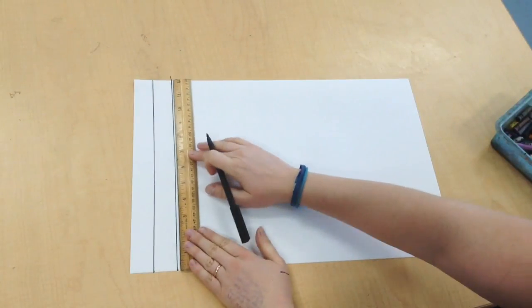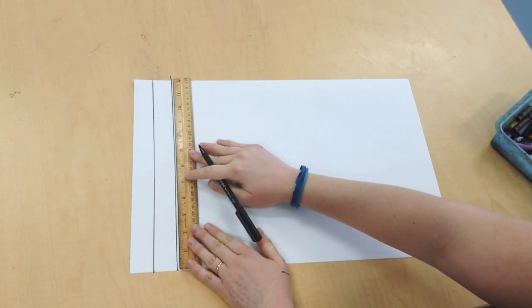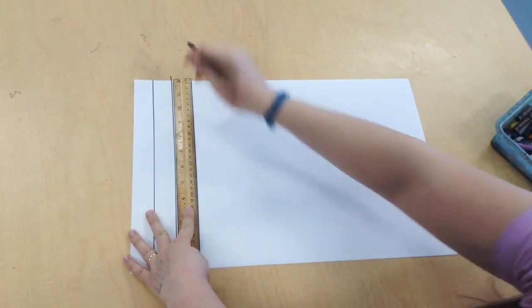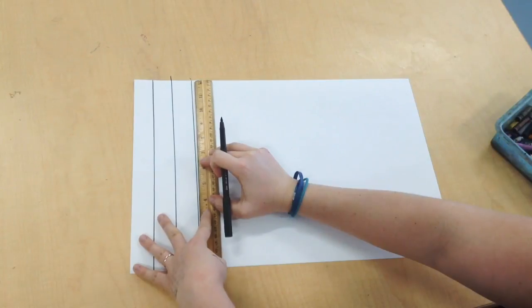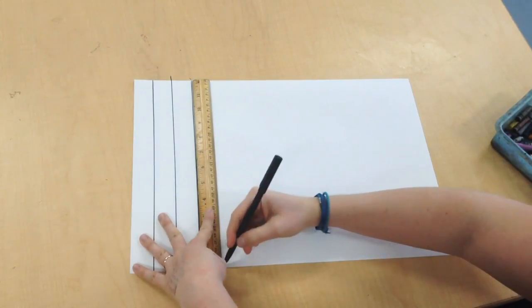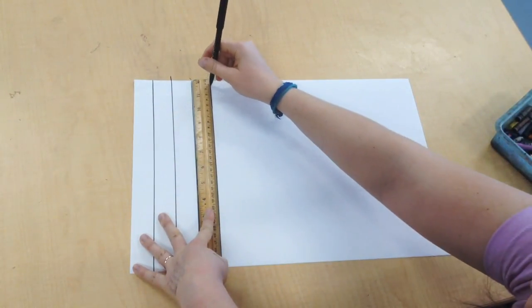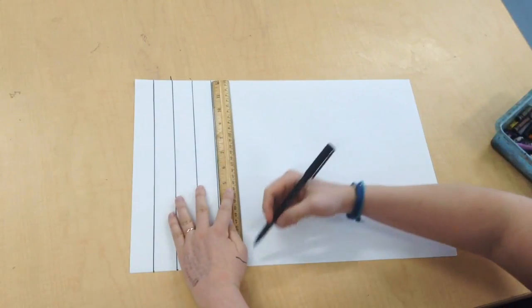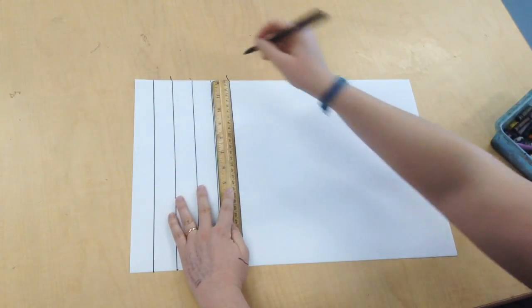Then I'm going to move my ruler over, line it up, draw another line. I'm going to do this all the way down my page. That's going to give me some nice evenly spaced stripes that I can use to make patterns.